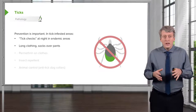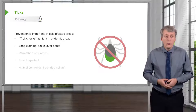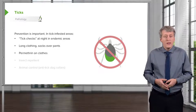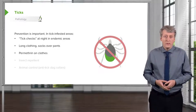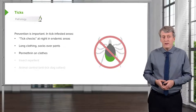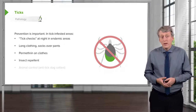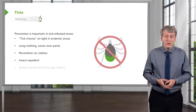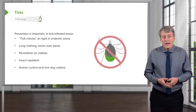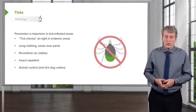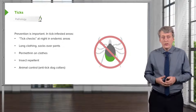Patients in tick-borne illness areas should wear long clothing, socks over pants. They can put permethrin on their clothes if there's a very high rate of tick infestation. Insect repellant is effective against these, especially those with DEET. Animal control is important too, so we should put anti-tick collars on our dogs.